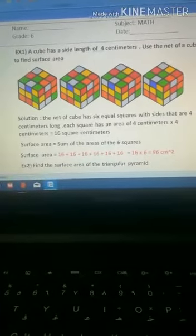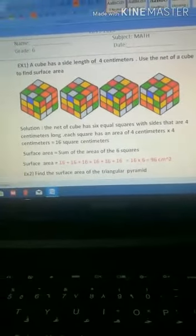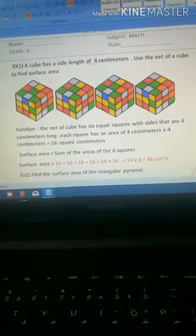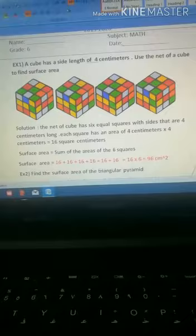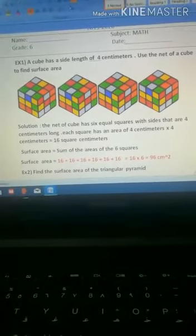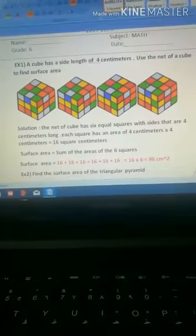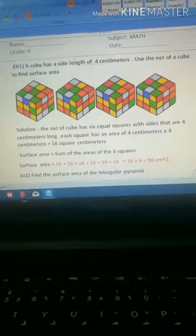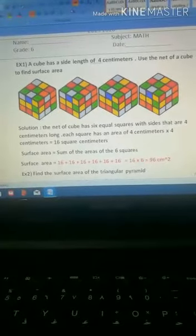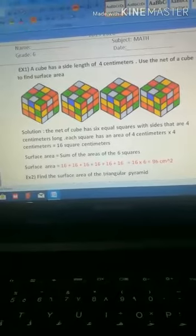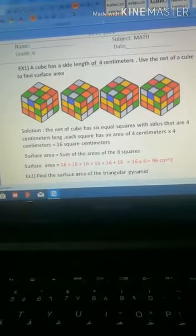Let's get started with example number one. A cube has a side length of 4 centimeters. Use the net of the cube to find the surface area. The first step is to write the formula. I know that a cube has no formula, but I know that a cube has six lateral sides of squares. So you have to find out the area of a square.